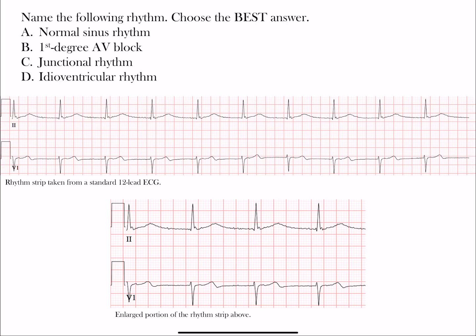To orient ourselves, we have rhythm strips taken from a standard 12-lead ECG — both lead II and V1. Lead II is an inferior limb lead, and V1 is one of those right-sided precordial leads that gives us a great short-axis view of the heart, especially the atria. These are the best leads to look at when examining for atrial abnormalities, where we look at the P waves.